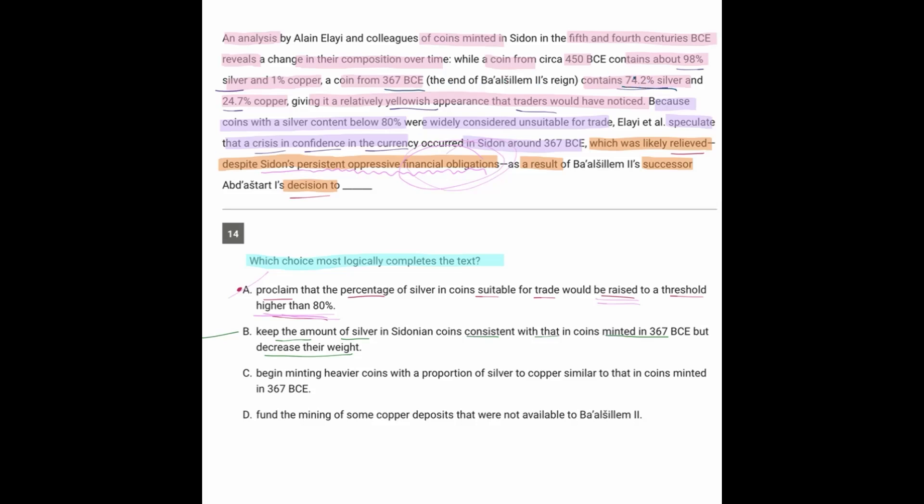And if that silver is kept the same, but the weight is decreased, that basically means we're getting rid of this extra copper that's in there. So that would be a way to kind of raise the silver proportion without necessarily coming up with more money, more silver that they didn't have because of those financial obligations. And admittedly, I don't love this, but that's the answer.